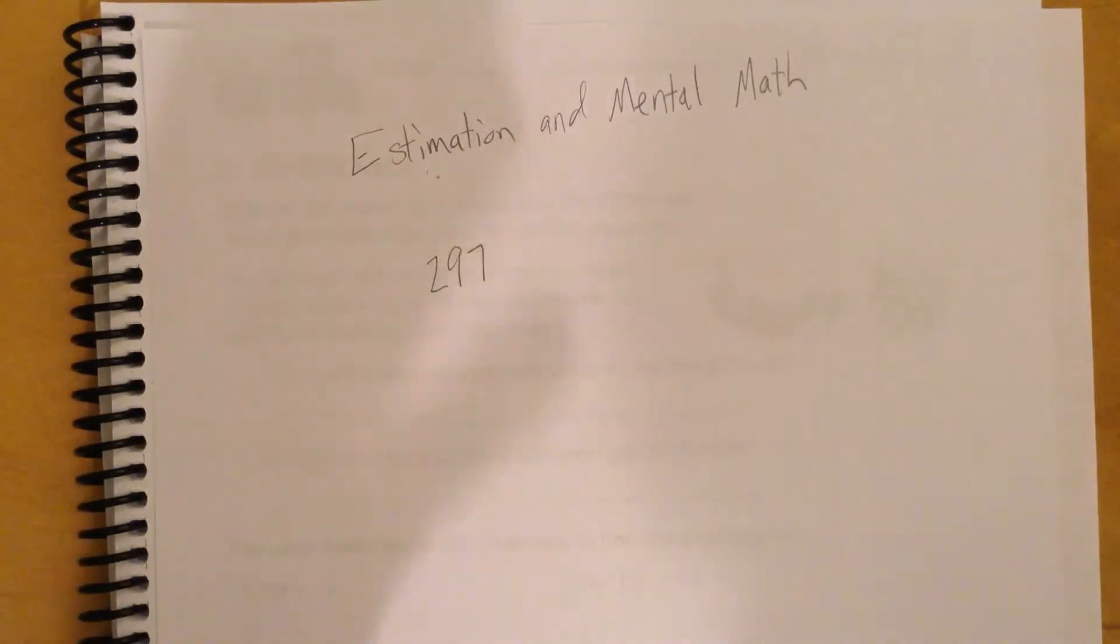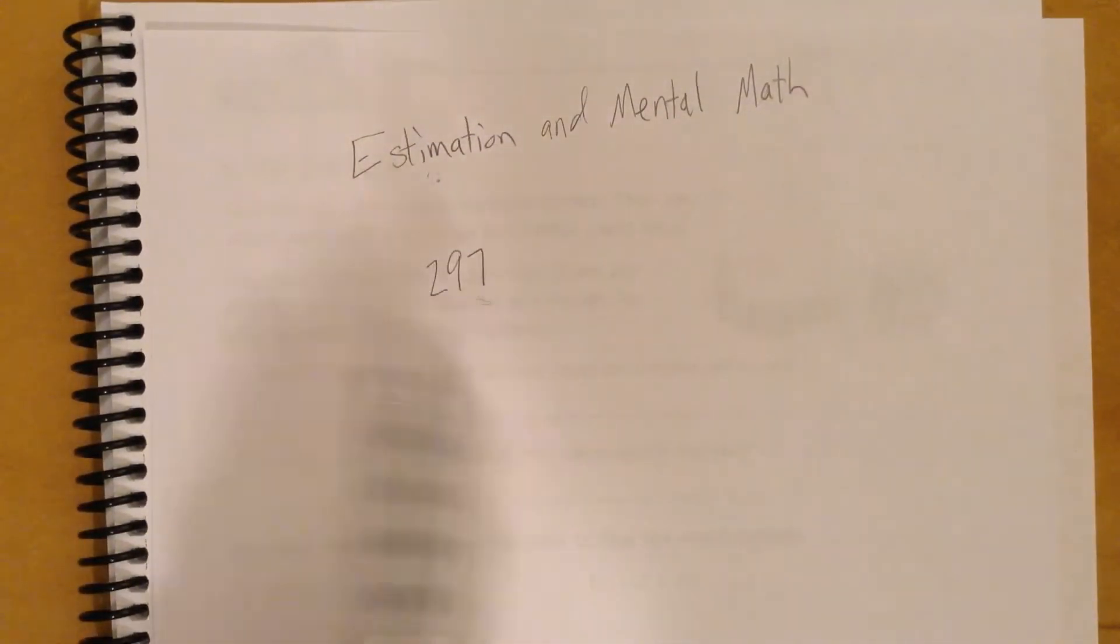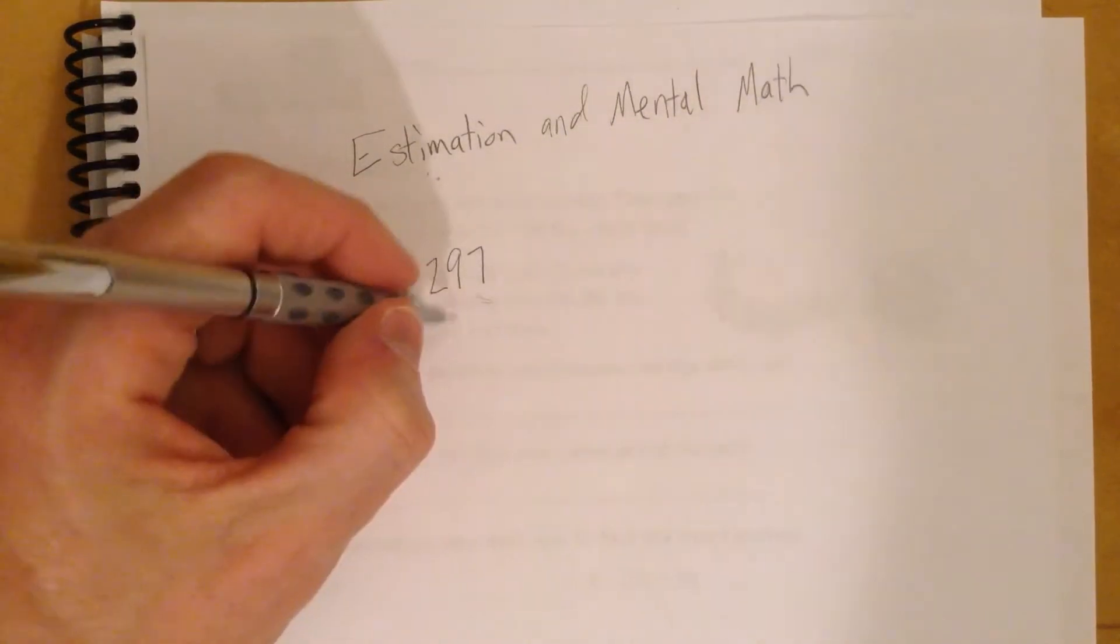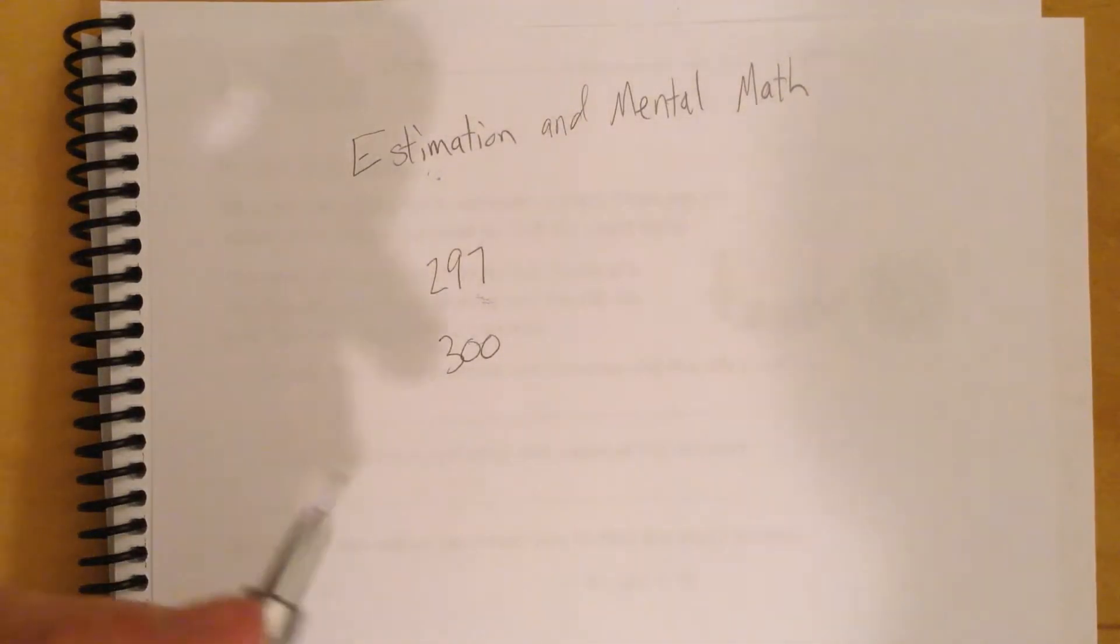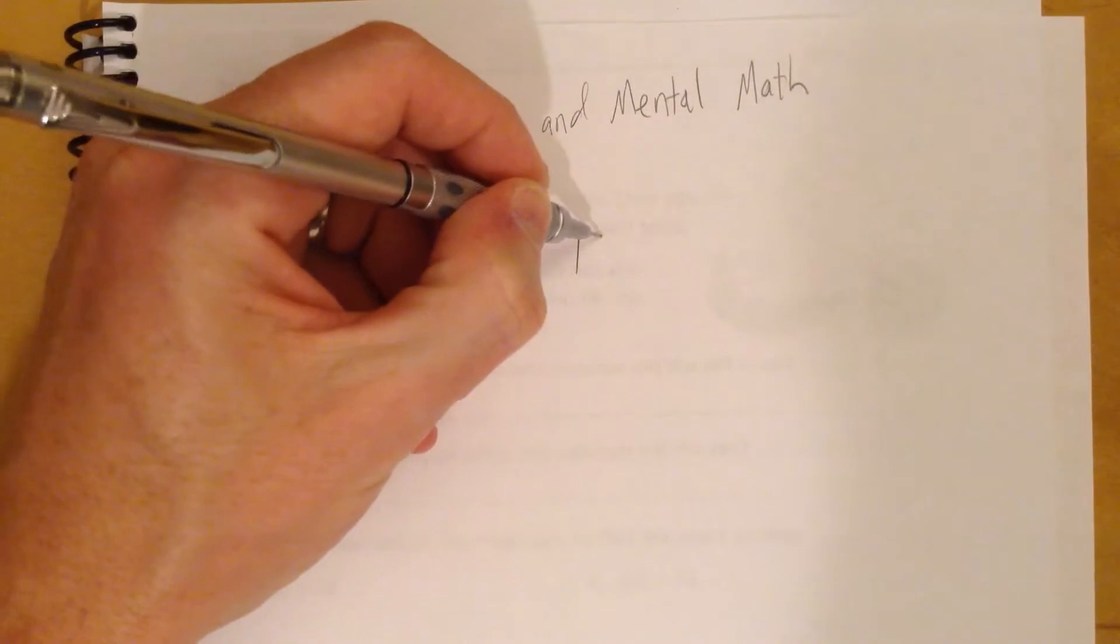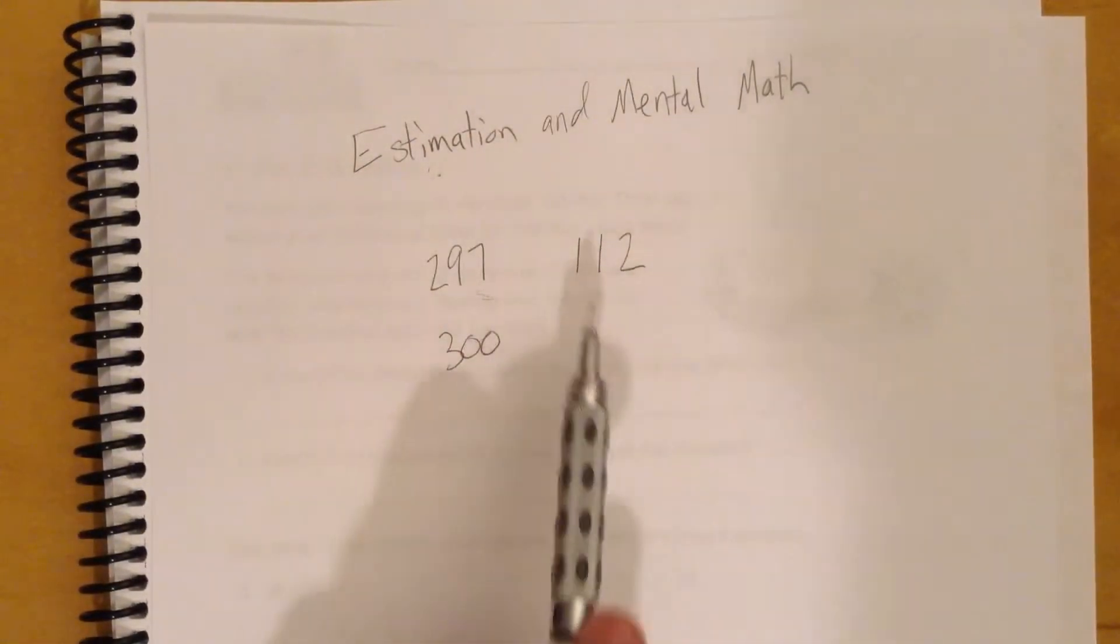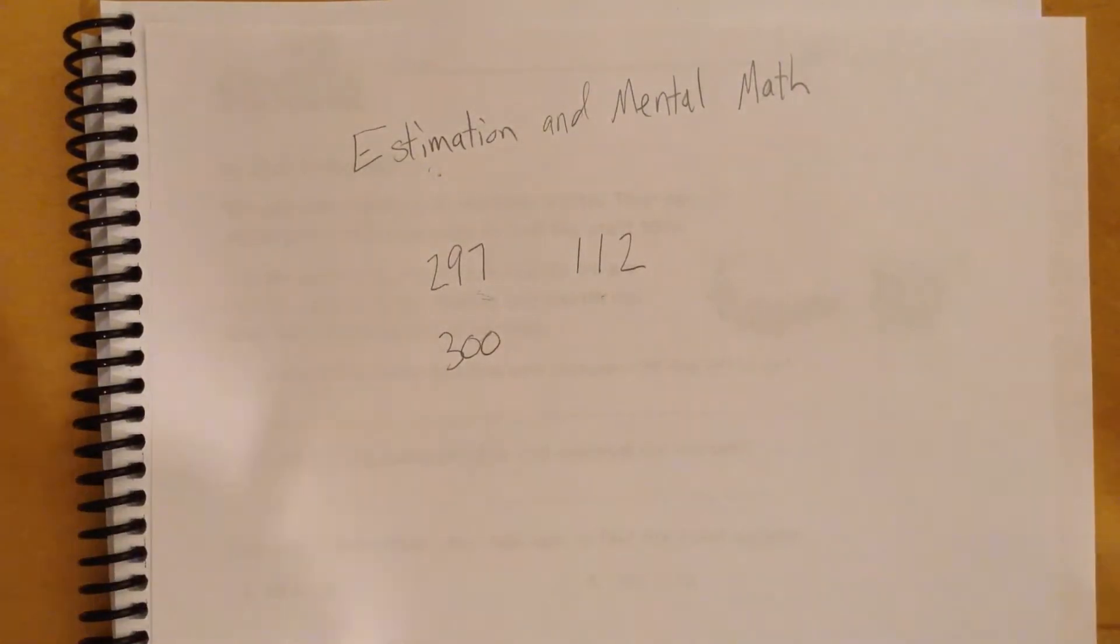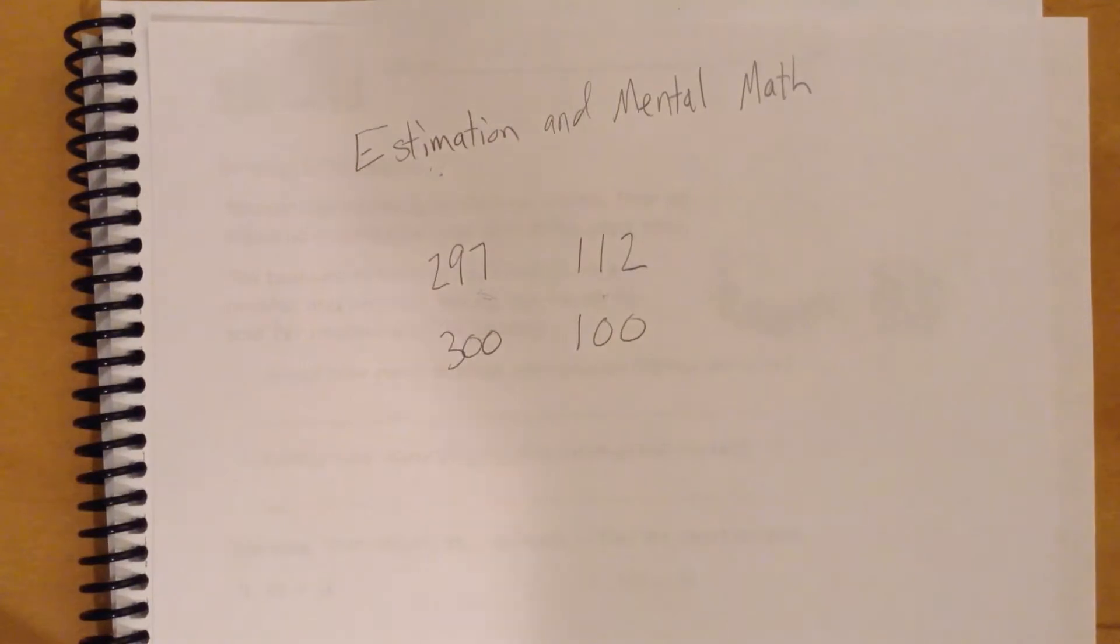And so if you're really thinking about it, we're only three 1s away from making that 300. So we would really round that up to 300, right? Let's take another number, 112, just like this. So this number is really close to a large number as well. So we're going to round this one down to 100.